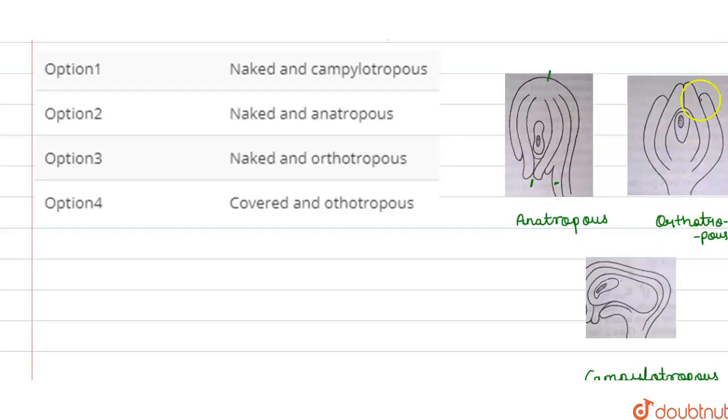So, if we look at orthotropes, this is a micropylar end. And this is a chalazal end. These two are in a straight line in orthotropes case.